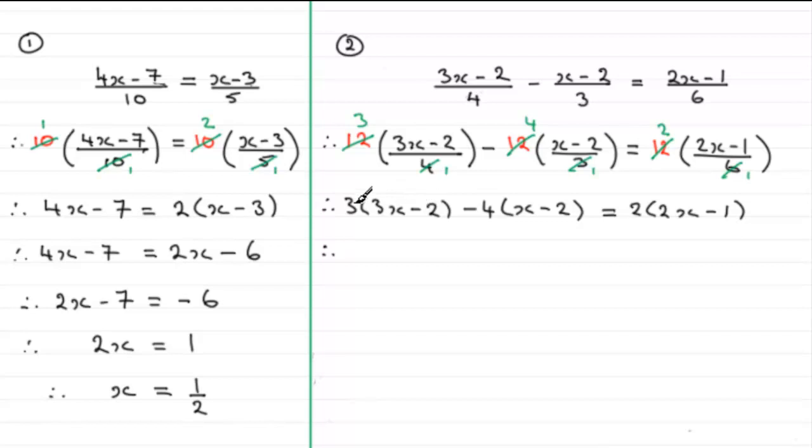What we've got if we expand this bracket is 3 times 3x which is 9x and 3 times minus 2 which is minus 6. Here be careful, we've got minus 4 multiplied by the two terms so minus 4 times x is minus 4x but minus 4 times minus 2 is going to be plus 8. And this equals 2 times 2x which is 4x and 2 times minus 1 which is minus 2. And I'm going to group up my terms on the left hand side. So we've got 9x minus 4x which is 5x and then we've got minus 6 plus 8 which is plus 2. And this equals the 4x minus 2 on the right hand side.